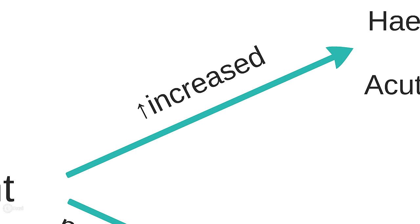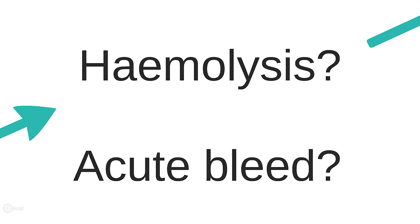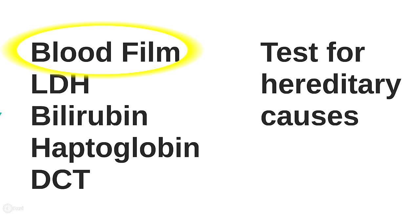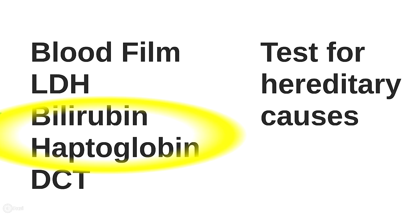If the reticulocytes are high, you can consider hemolysis as a cause. A blood film is a good place to start — for example, you can see fragments of red blood cells that have been broken down mechanically, or the bite cells of G6PD deficiency. LDH is often raised in hemolysis. Bilirubin and haptoglobin may be useful in differentiating between extravascular or intravascular causes of hemolysis, with bilirubin raised and haptoglobin reduced in diseases that cause intravascular hemolysis such as HUS or TTP.